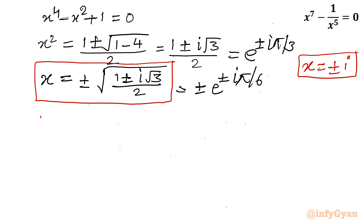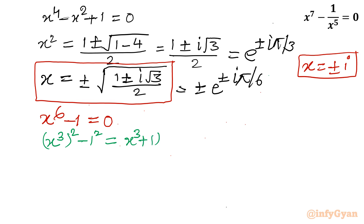Now moving to equation number 2: x power 6 minus 1 equal to 0. Writing it as x cube whole square minus 1 whole square and applying difference of squares, we get x cube plus 1 times x cube minus 1. Applying the sum and difference of cubes identities: a plus b times a square plus b square minus ab.